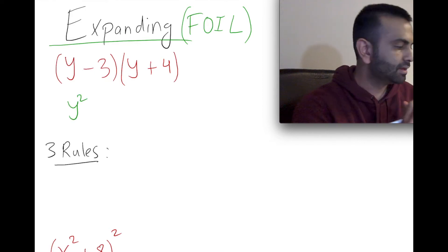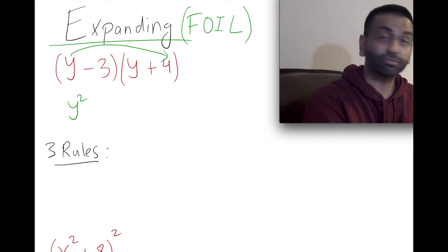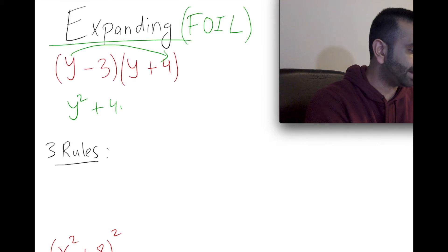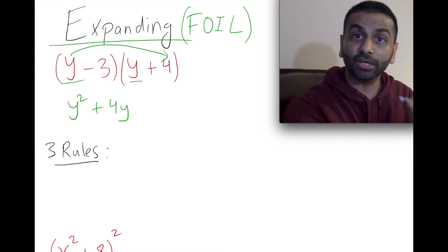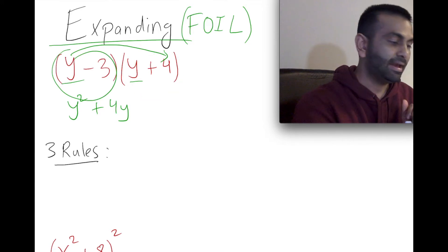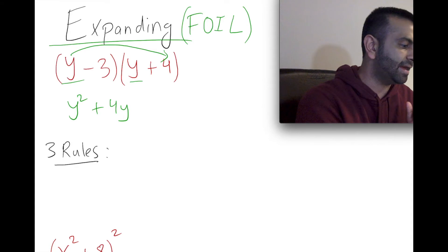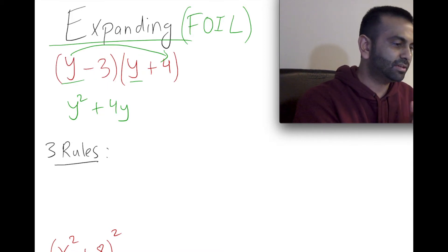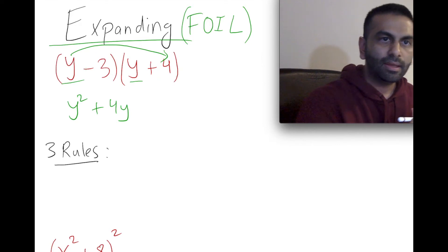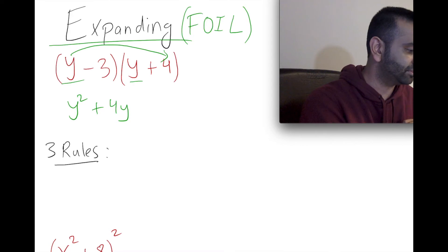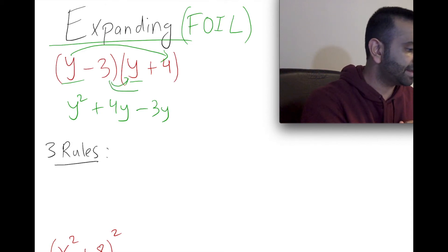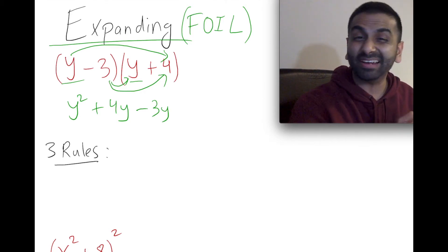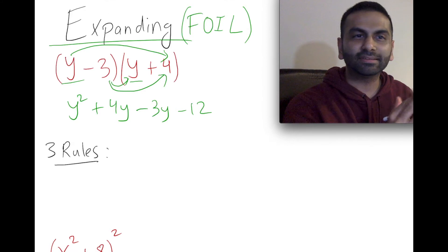y times y is y squared. Then we have y times the four — both positive — so that's plus 4y. Notice this is where the acronym comes from: First means you multiply the first terms in both, Outer is y and the four, Inner is the next pair, and Last is the final pair. Now distributing the negative three: negative three times y is negative 3y, and negative three times four is negative twelve — negative times positive is negative.